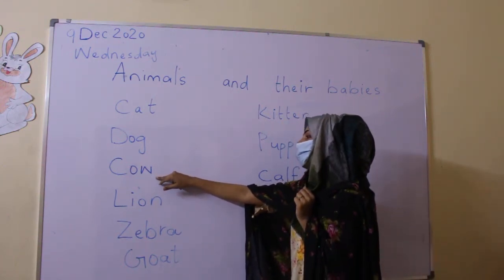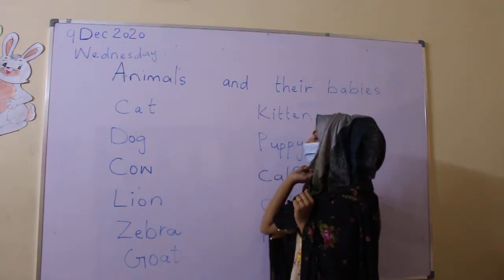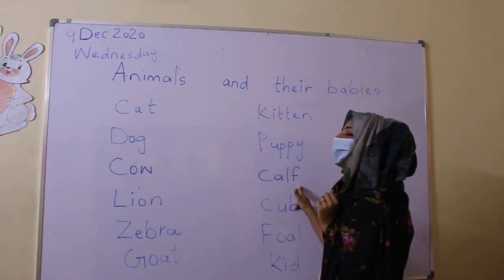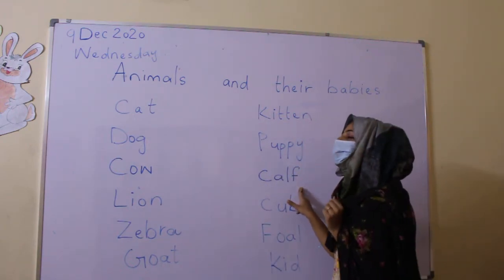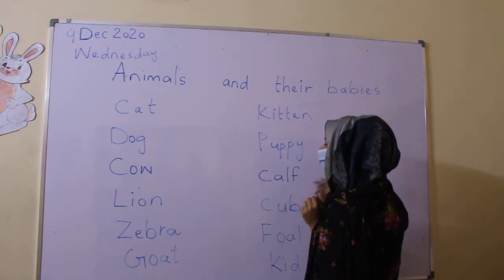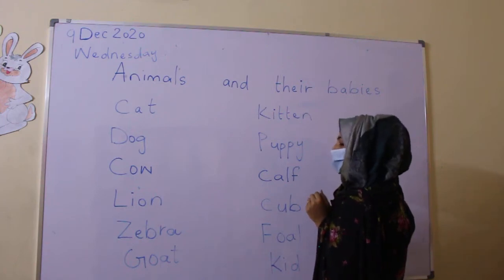Number three — cow. And the name of her baby is calf. Calf.